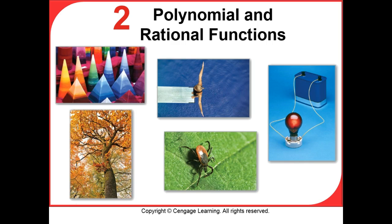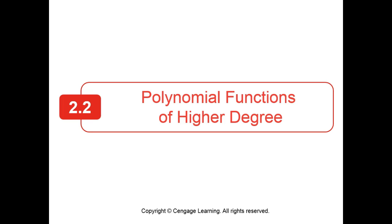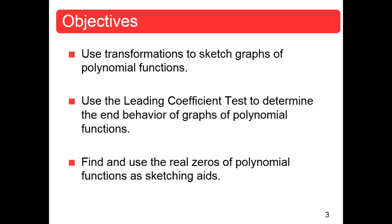And this is where we left off last time, according to my memory. I think we finished 2.1 and we're getting started on 2.2. Chapter 2 is polynomial and rational functions. The 2.2 section is polynomial functions of higher degree. If you recall, 2.1 dealt mostly with quadratic functions. Functions of higher degree are not nearly as easy as quadratic functions.